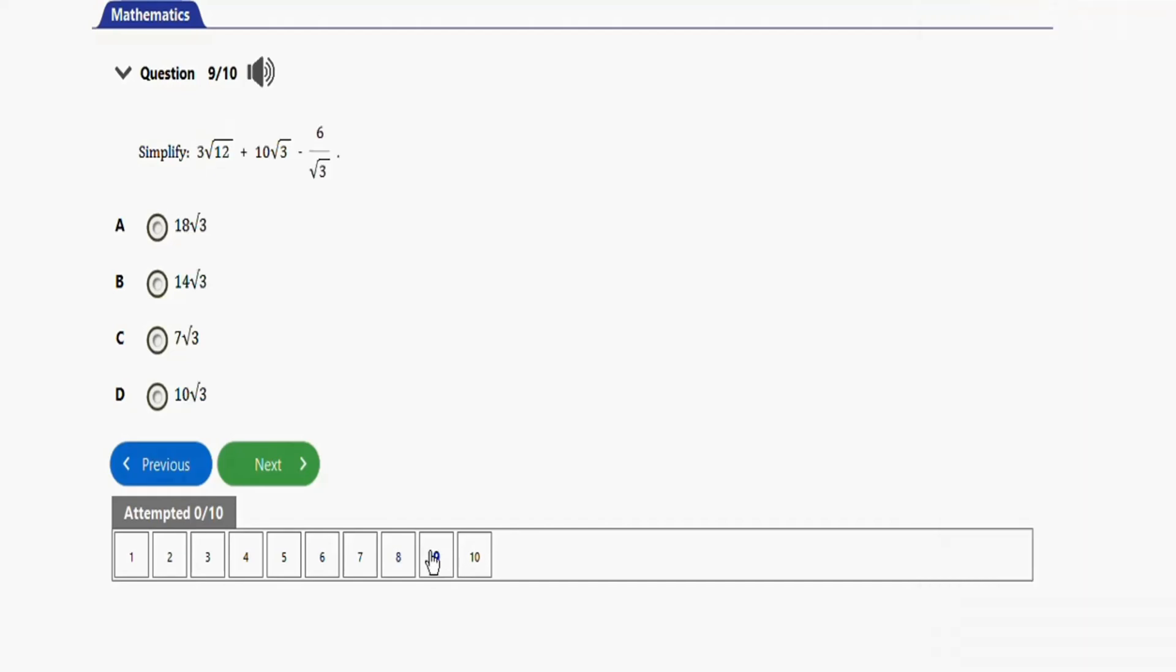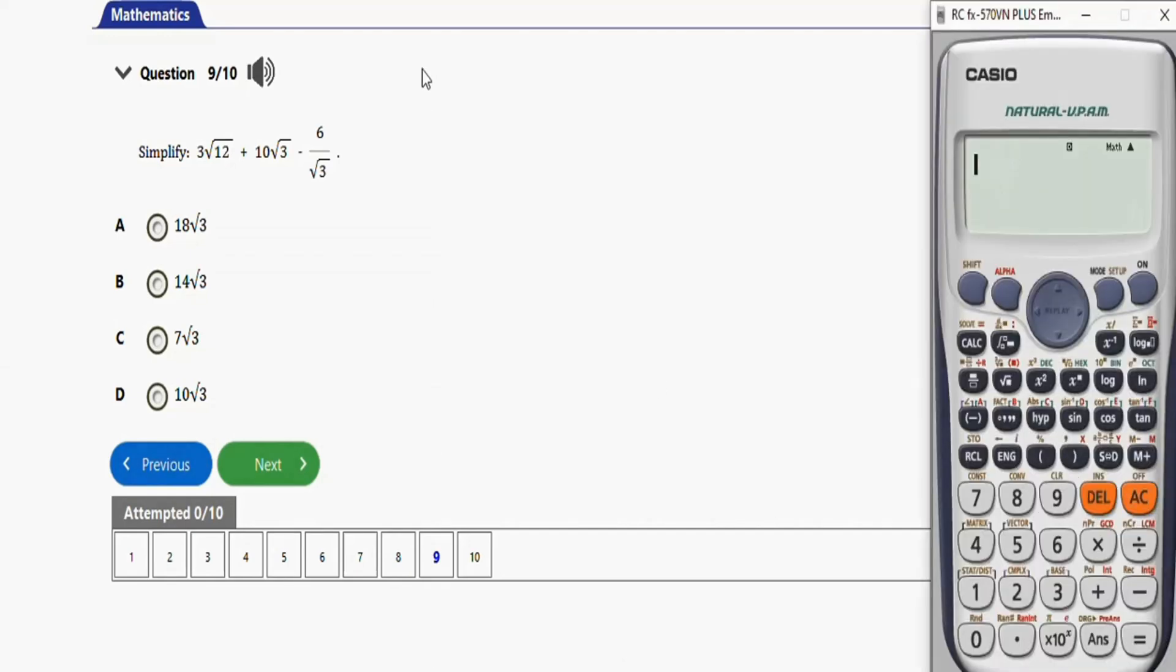The last question before we end this video, it says simplify this expression. Let's get the calculator again. We have 3√12 plus 10√3 minus in fraction 6 over √3. That's it guys, let's press equal to see the output. 14√3 is the right option, option B.